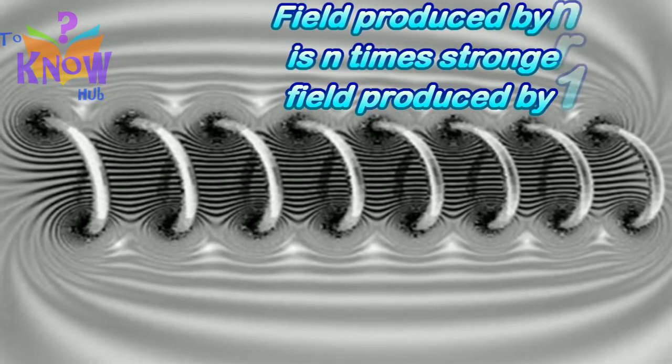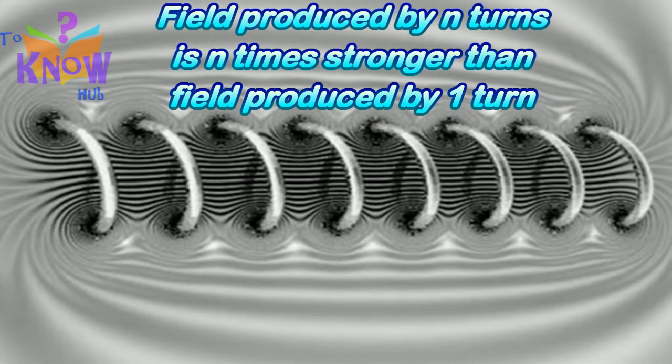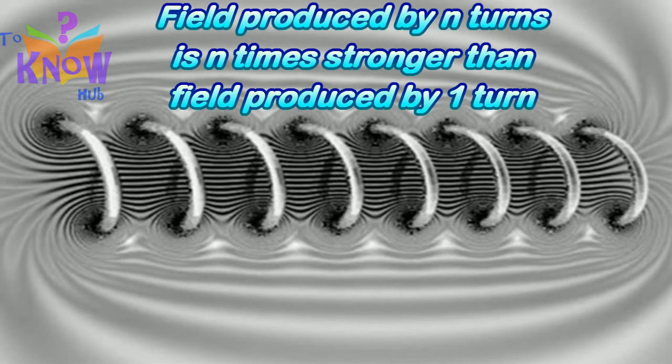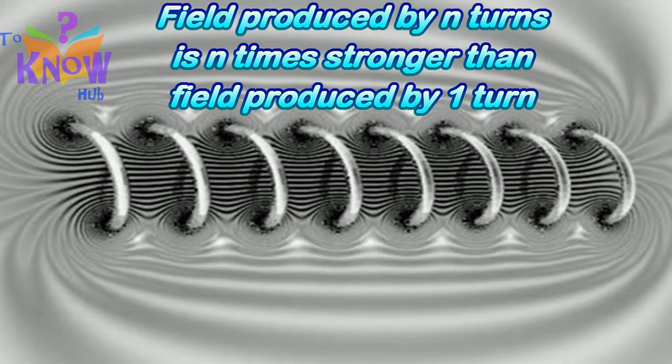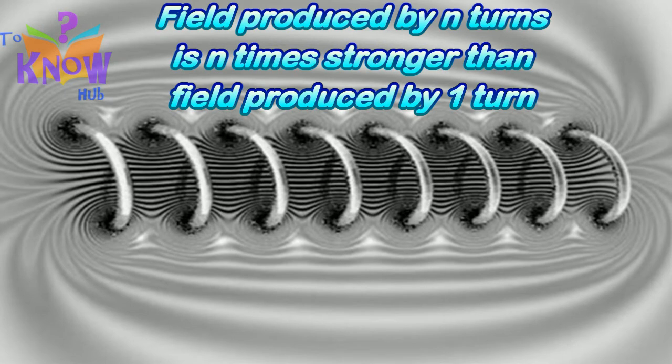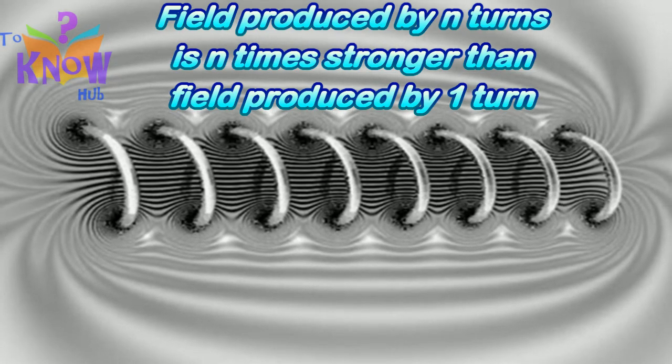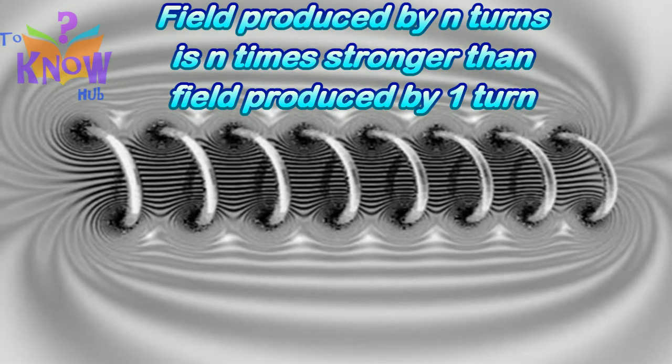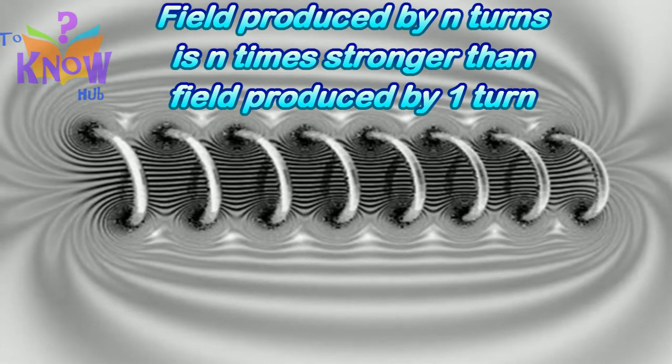Means, magnetic field because of different loops gets added up and creates a very powerful magnetic field. In fact, if there are n turns, the field produced is n times as large as that produced by a single turn. That is, n times stronger than a magnetic field produced by a single turn.